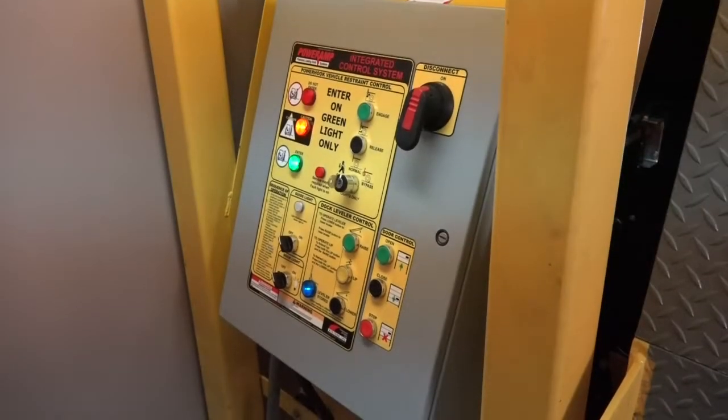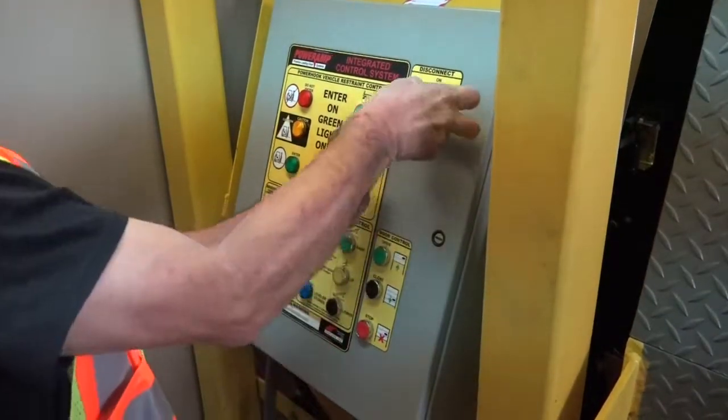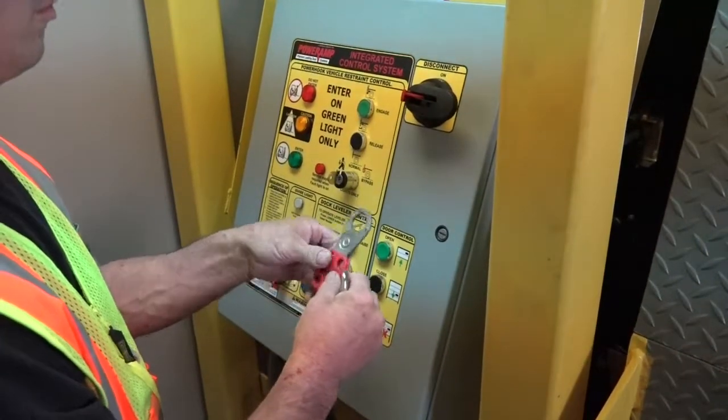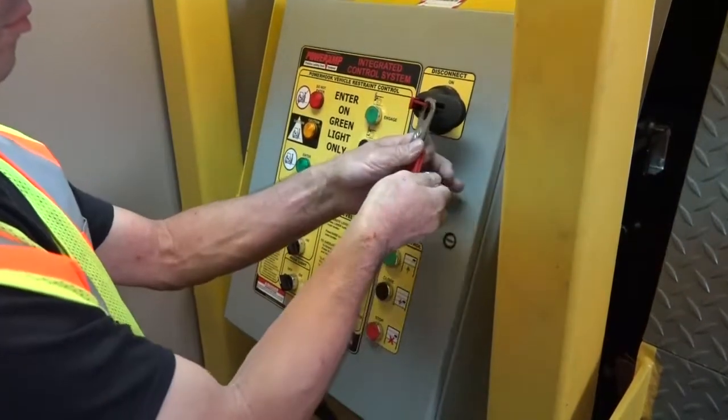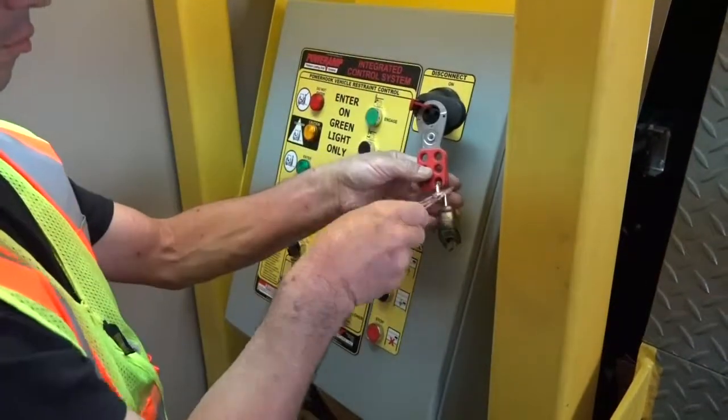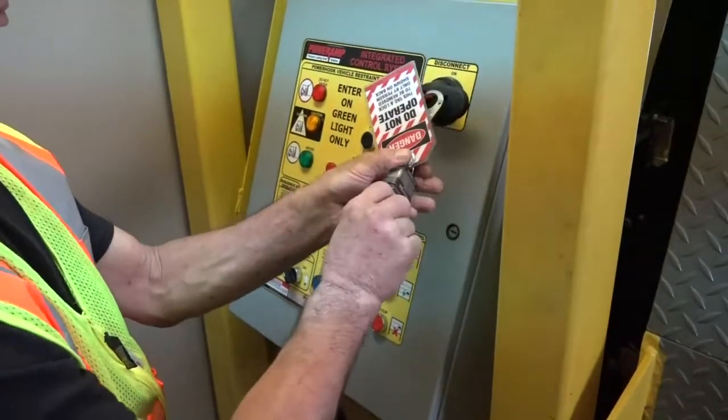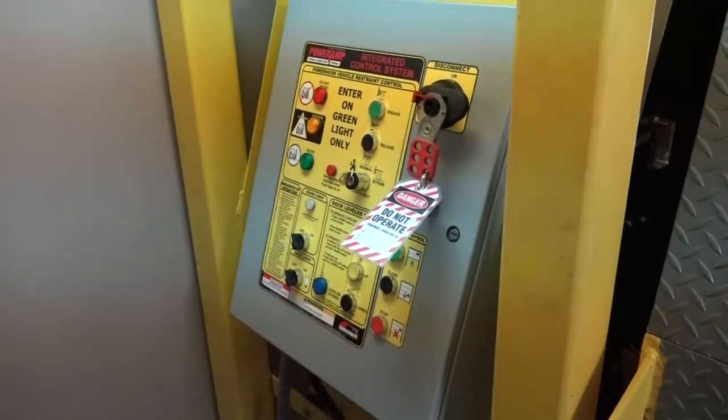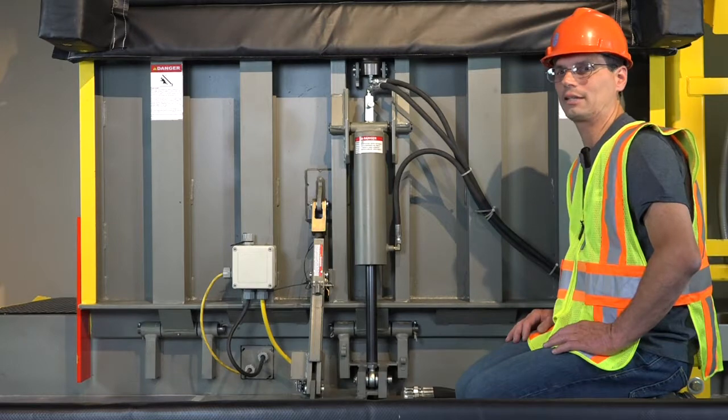When working on any equipment, always lock out and tag out the dock leveler before work. Okay, with the dock leveler locked out and tagged out, we can now proceed with bleeding the system.